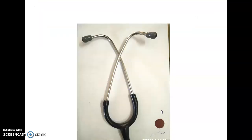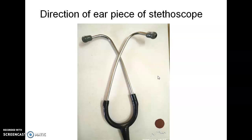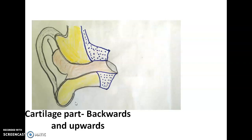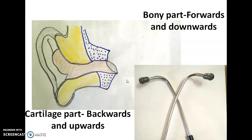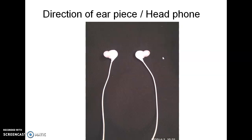This explains why the earpiece of the stethoscope is directed downwards and forwards. The outer cartilaginous part of the canal is directed backwards and upwards, and the inner bony part is directed downwards and forwards. Cartilage can mold and change shape, but bone is rock solid and cannot. So the earpiece direction must match the bony part — downwards and forwards — since the cartilage will mold around it. The same principle applies to headphones and earbuds: they are also directed downwards and forwards for comfortable placement.